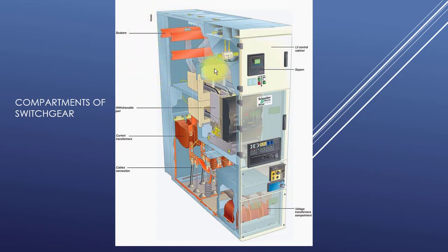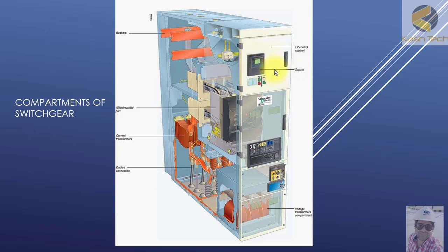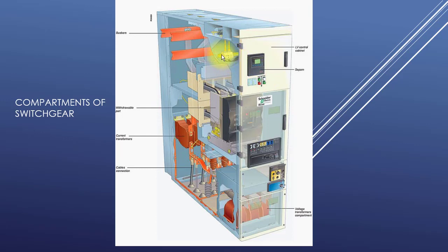Here you can see the low voltage equipment like relays and meters, and a mimic diagram is installed here. You can see the din rail and components installed on it. This compartment is called the LV compartment.